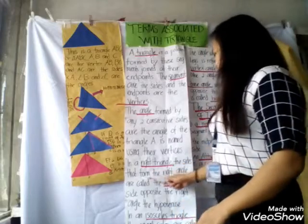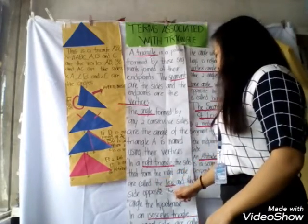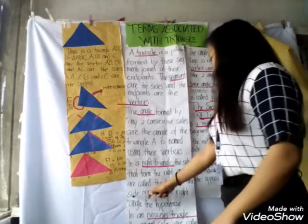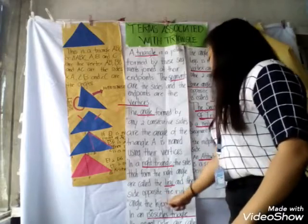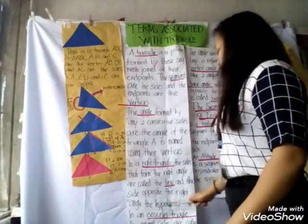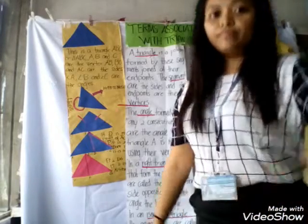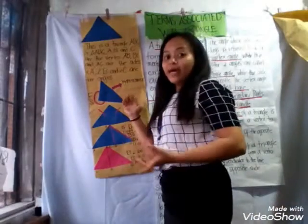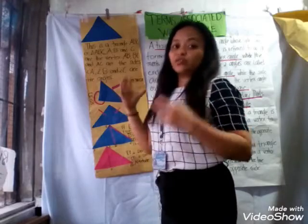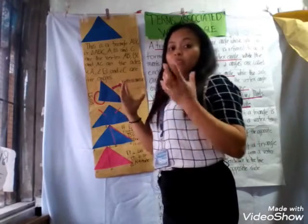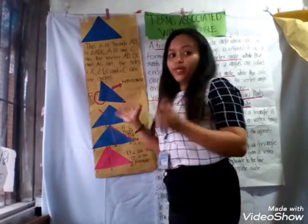The sides that form the right angle are called the legs, and opposite the right angle is the hypotenuse. Right triangle — from the word 'right' — because its measure is 90 degrees.